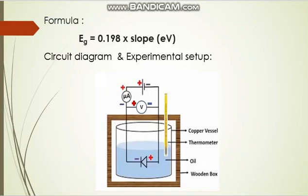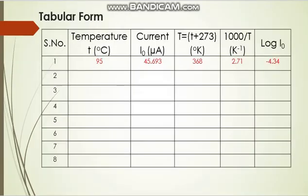The circuit diagram shows a diode immersed in an oil bath for heating. There is a heating arrangement, a thermometer, voltmeter, micrometer to measure current, and a power supply to apply potential in reverse bias to the diode. The tabular form includes: serial number, temperature, current, temperature converted into Kelvin, 1000/T, and log(I₀).